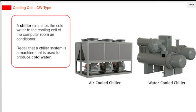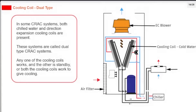A chiller circulates cold water to the cooling coil of the computer room air conditioner. Recall that a chiller system is a machine used to produce cold water. In some CRAC systems, both chilled water and direct expansion cooling coils are present; these are called dual type CRAC systems. Any one of the cooling coils works while the other is on standby, or both can work simultaneously to provide cooling.